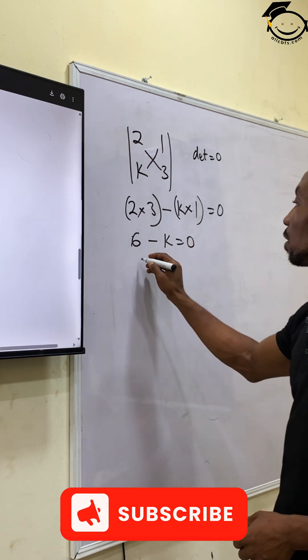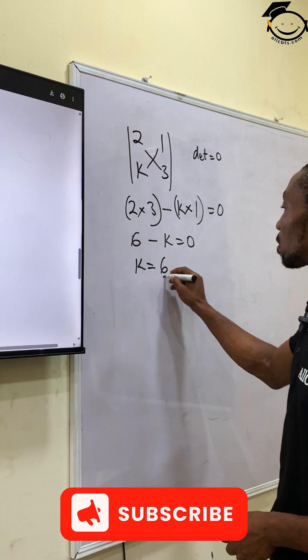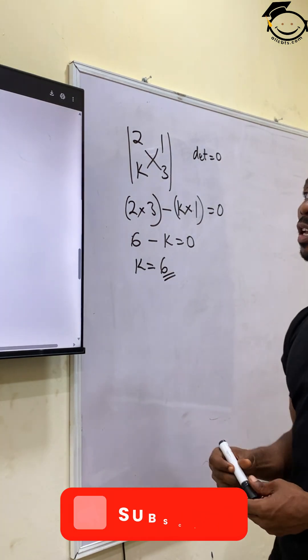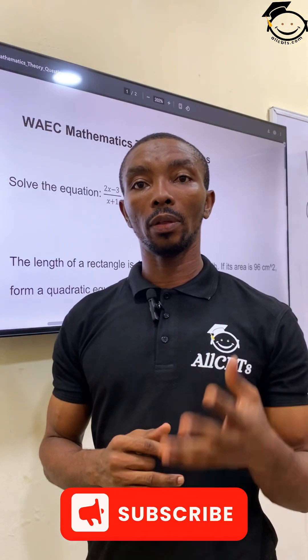to the other side, k becomes 6. So our value for k is 6.